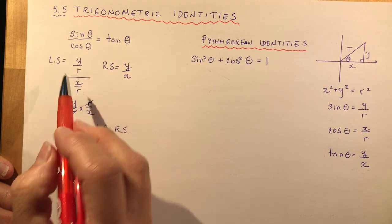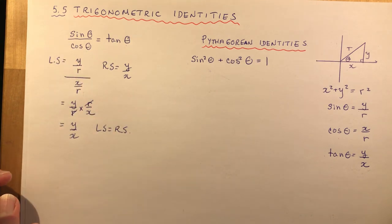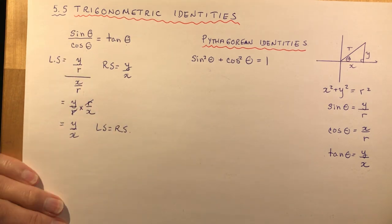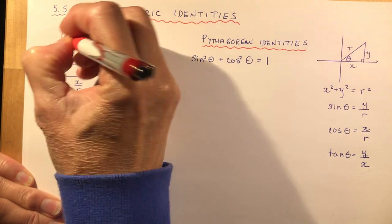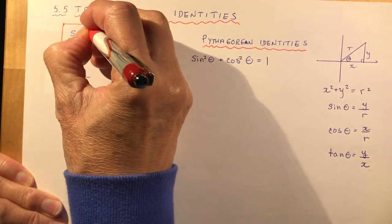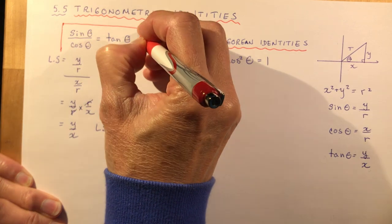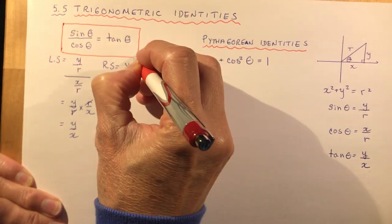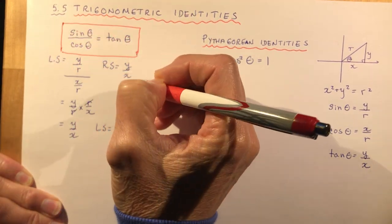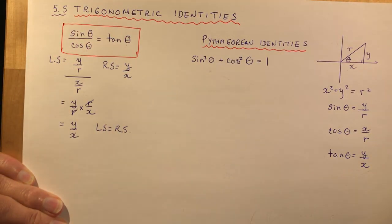So that's a really basic trigonometric identity that you need to know: tan theta is equal to sine theta over cos theta. You'll use that an awful lot.